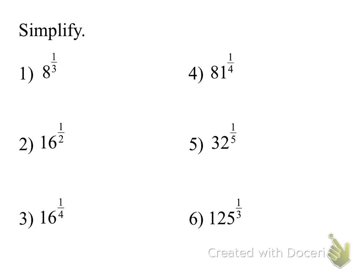What kind of root is number one? Cube root. It's a cube root. And that means what times itself three times equals eight? Two. Good. The next one. What kind of root is this? A square root. And what is the square root of 16? Four. Good.